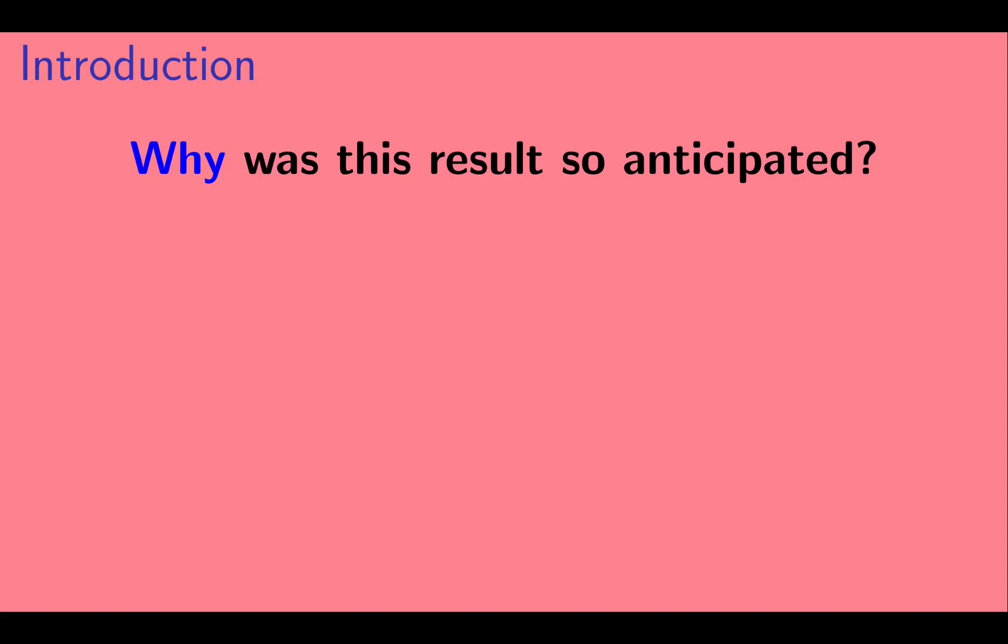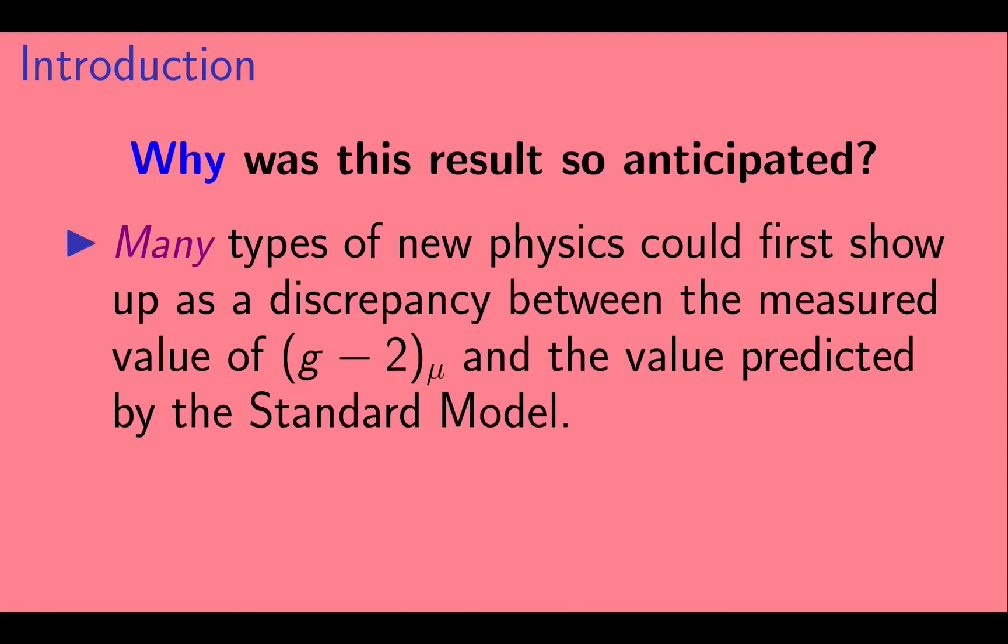So why was this result so anticipated? It's a combination of two reasons. First, there are many types of new physics that could first show up as a discrepancy between the measured value of muon g-2 and the value of muon g-2 predicted in the standard model.